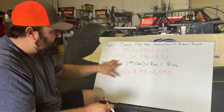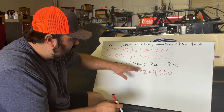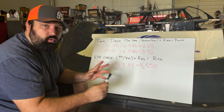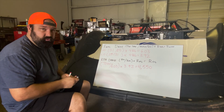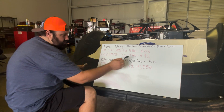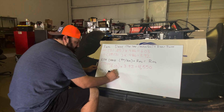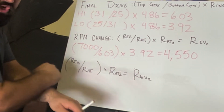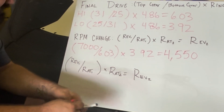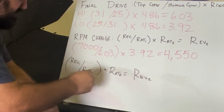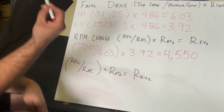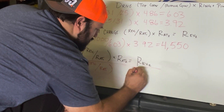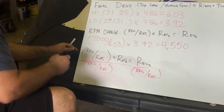We can also use this equation to instead calculate what ratio we want to run. To do that, we need to do a little bit of algebra. Starting with the original equation, I want to isolate ratio two — solve for it. To do that, I can divide both halves of the equation by the same term, which cancels out and isolates ratio two.